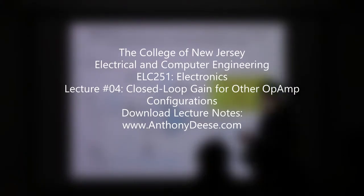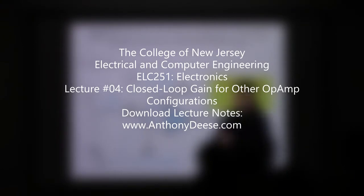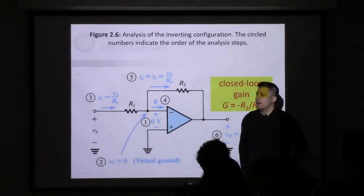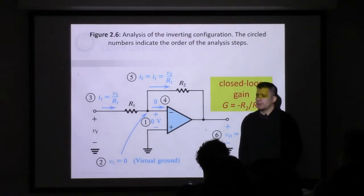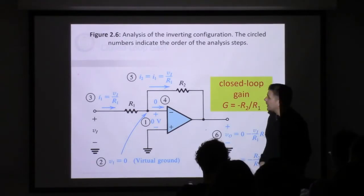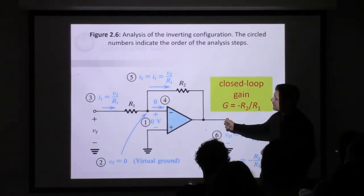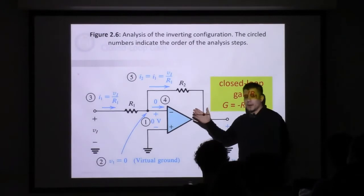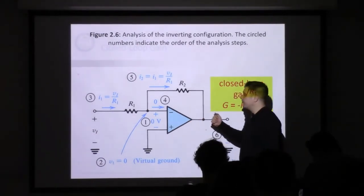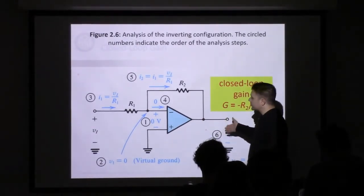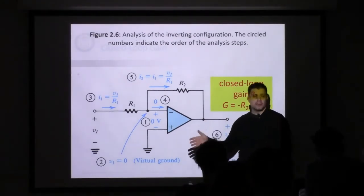We're in chapter 2, about a quarter of the way through, and we're talking about closed-loop configurations of op-amps. One that we looked at last time was the inverting type op-amp. I started with this slide because it gives such a great summary of how to do this analysis.